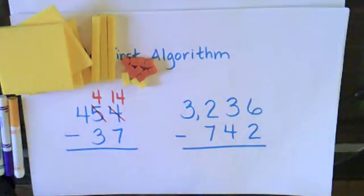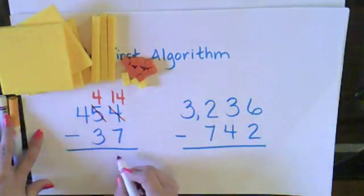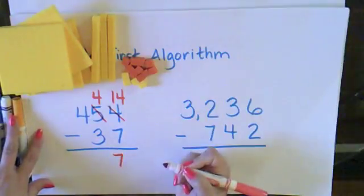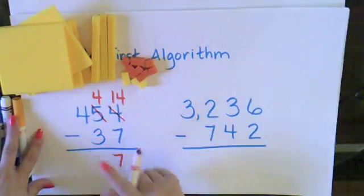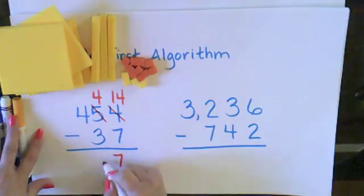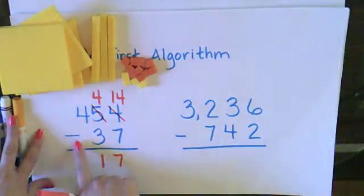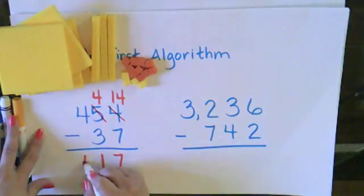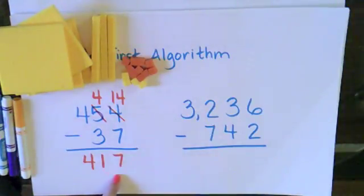So now I'm ready to do the subtraction. I have 14 take away 7, that gives me 7. Then I have 4 10s take away 3 10s, and that leaves me 1 10. And then I have 4 100s take away 0 100s, which leaves me 4 100s. So my answer is 417.